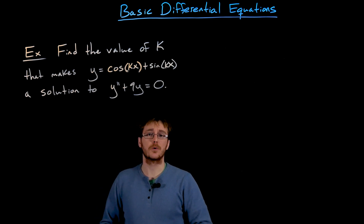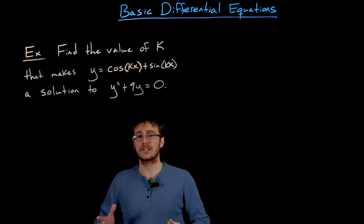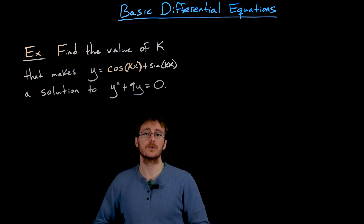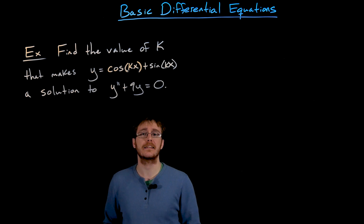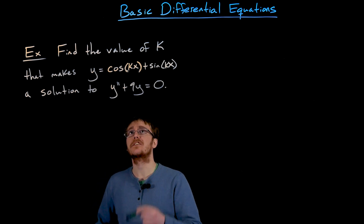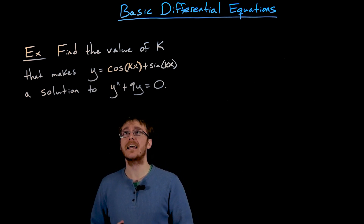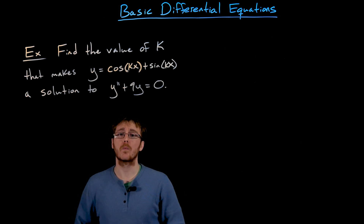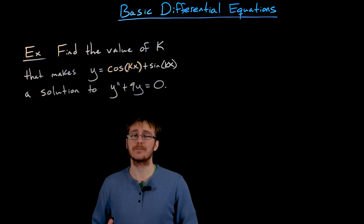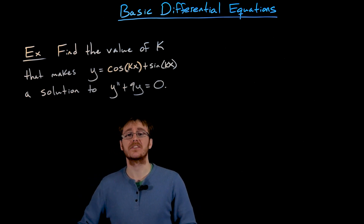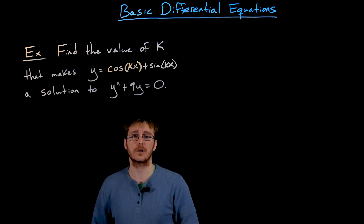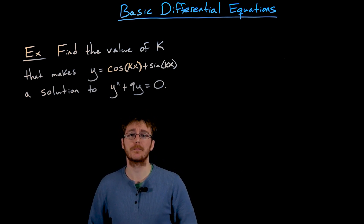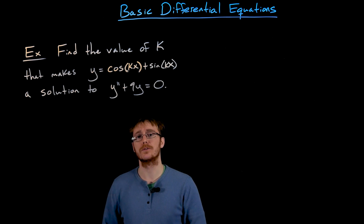This next example is a nice little twist on that practice problem of verifying a solution to a differential equation. We're given basically the solution to our differential equation, but we have to find the missing piece. We're asked to find the value of the constant k that makes the function y equals cosine of kx plus sine of kx a solution to our second order differential equation y double prime plus 9y equals 0.